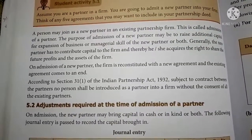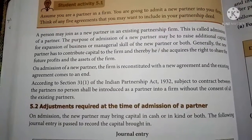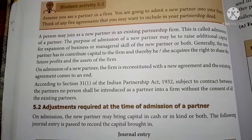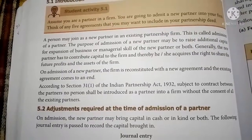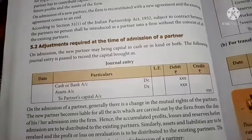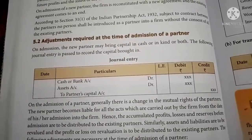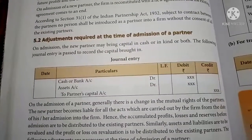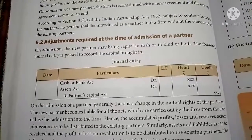When a new partner joins in the partnership firm, all the existing partners should consent. Then only the new partner will come into the business. The first adjustment required at the time of admission of a new partner is to record the capital brought by the new partner. If any capital or property is brought by the new partner into the partnership firm, the entry will be recorded accordingly.